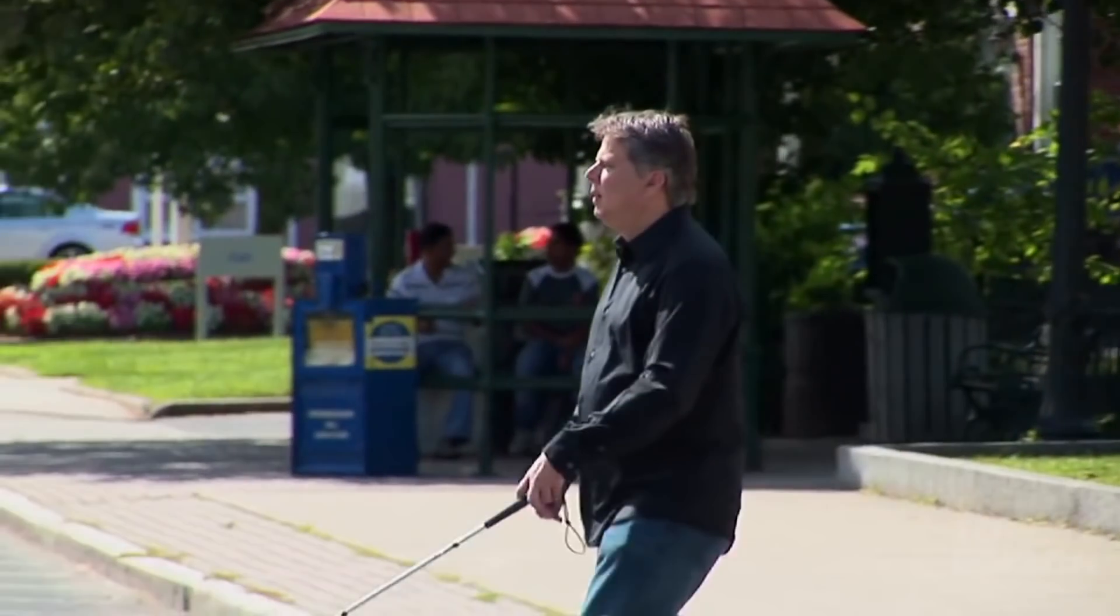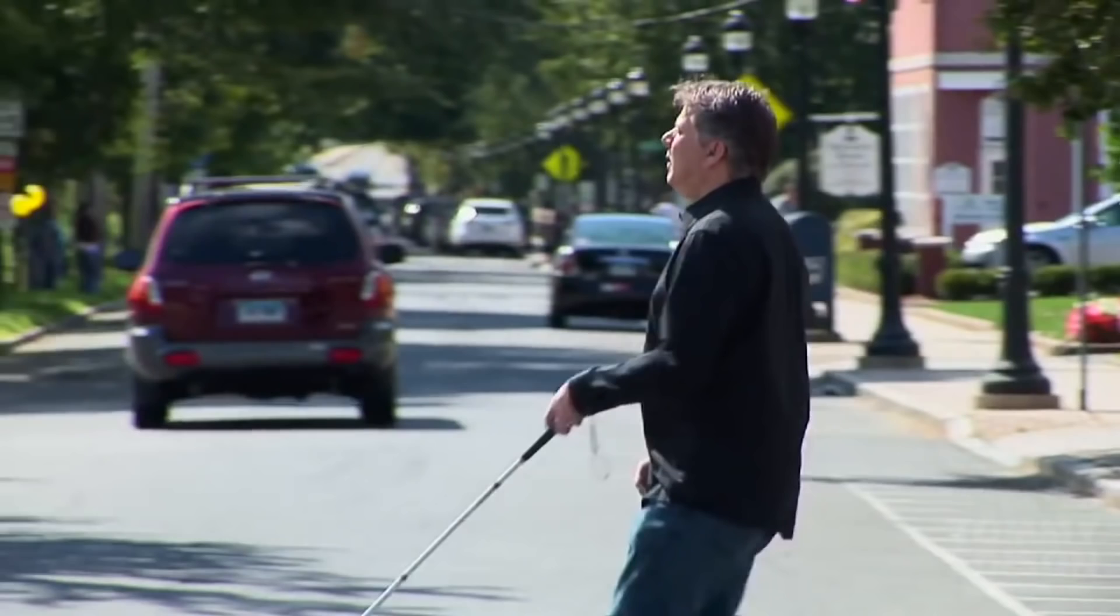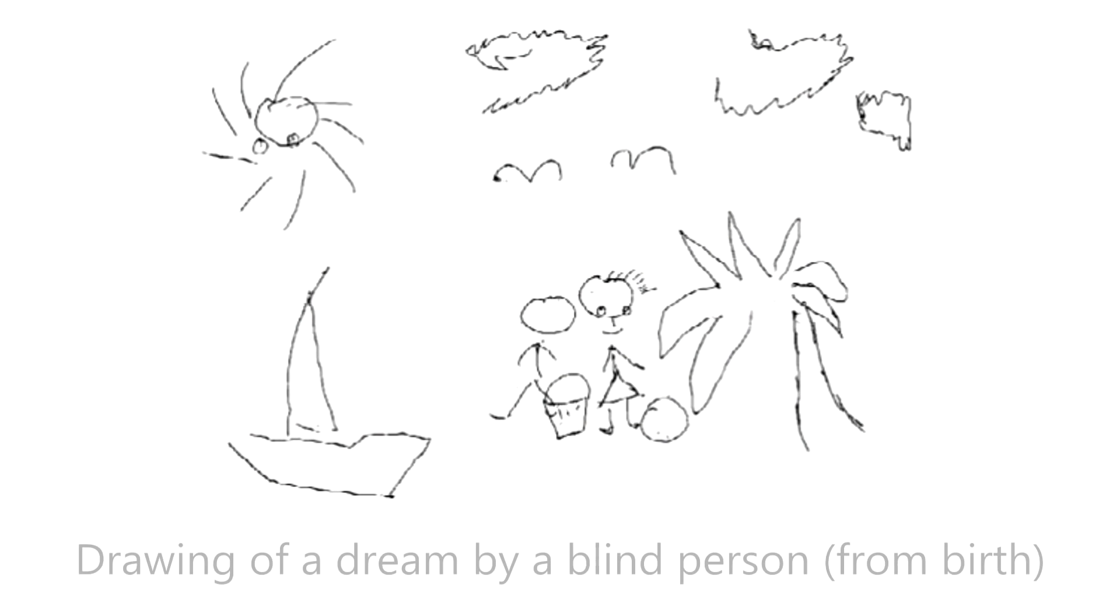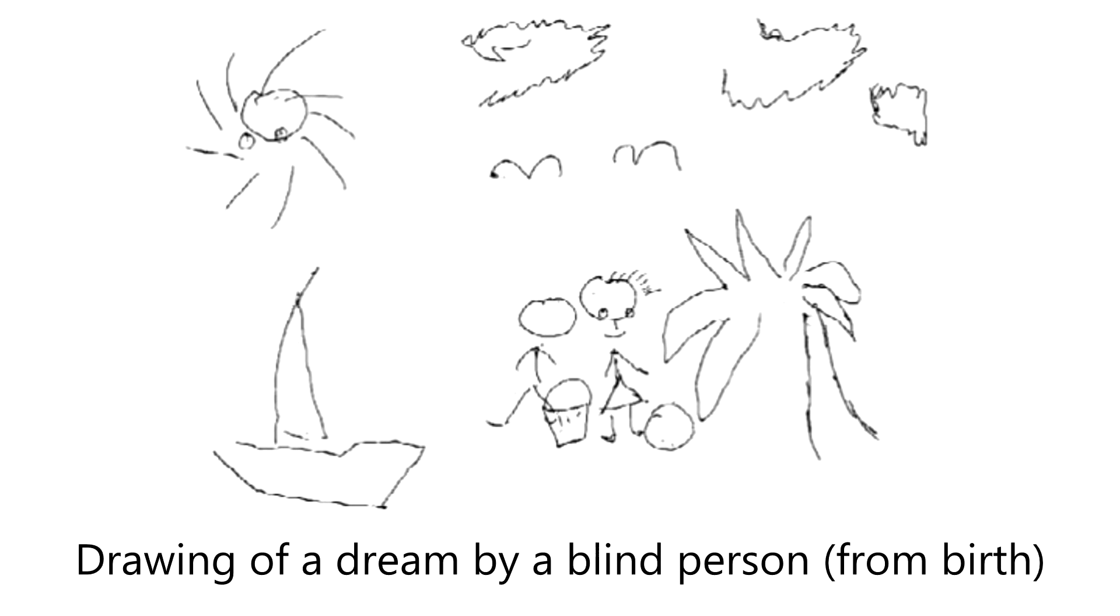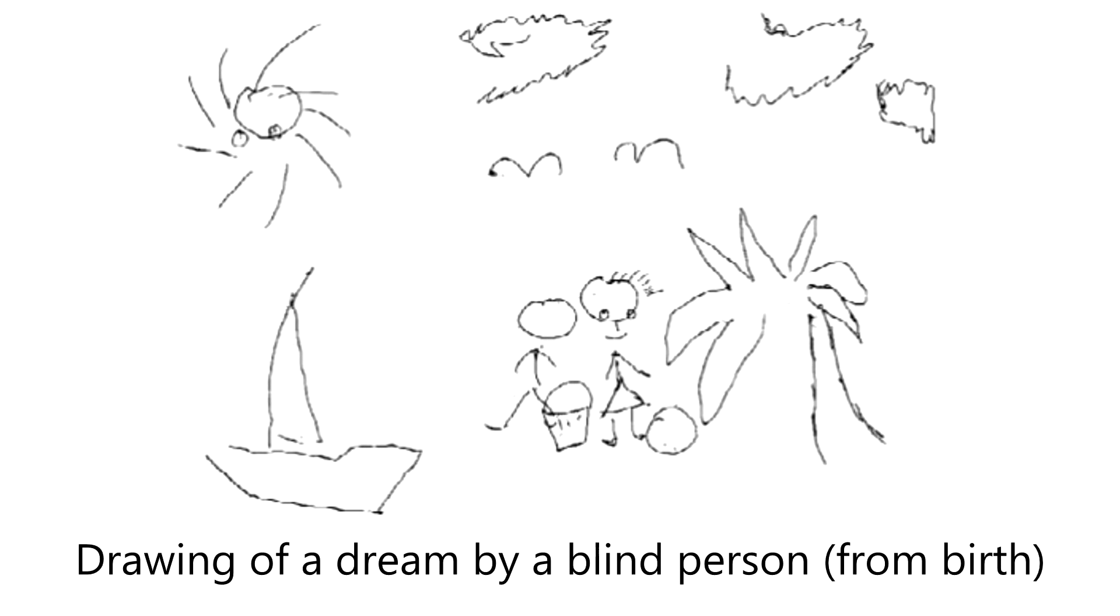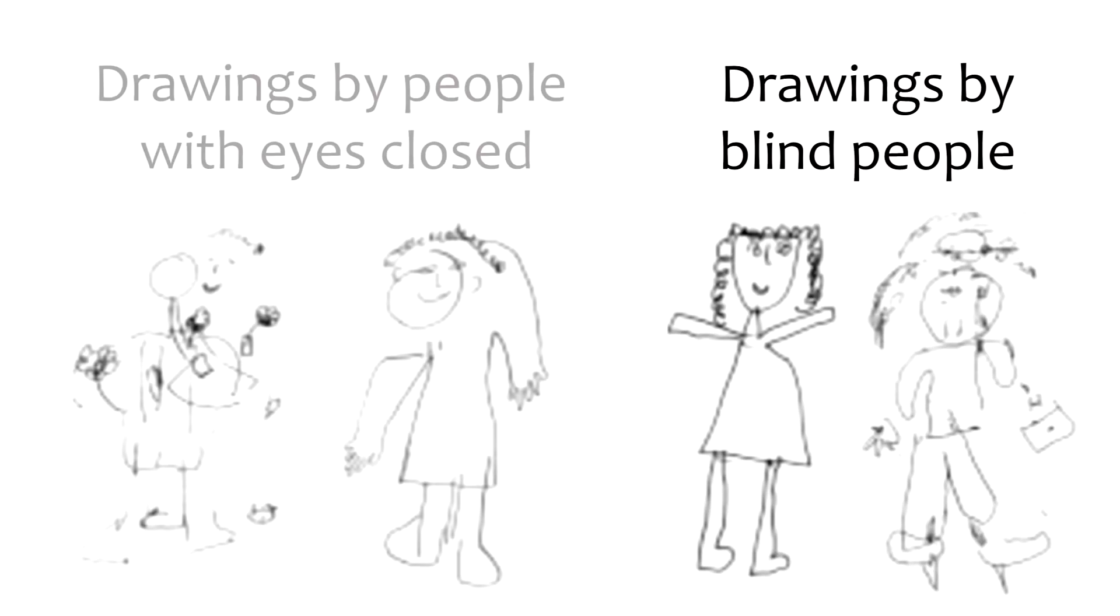We can also see this in people who have been blind from birth but do not echolocate. Congenitally blind people seem to have the same internal vision space as sighted people and echolocators. They dream visually and are able to draw as well, if not better, than sighted people who have their eyes closed. The only difference is that the blind tend to draw ears more frequently than people with sight do.